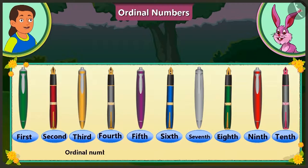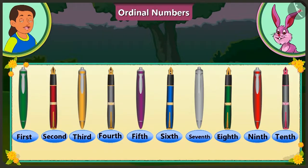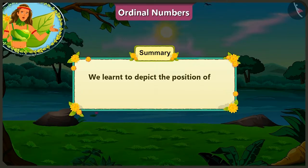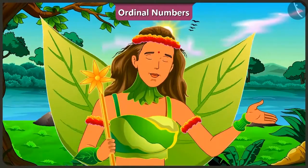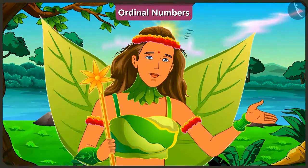Ordinal numbers depict the right position or order of anything. Bunny, it was very nice to talk to you — I shall leave now. Children, today we learnt how to tell the position of objects through ordinal numbers. In the next video, we will learn to count in bundles of ten.